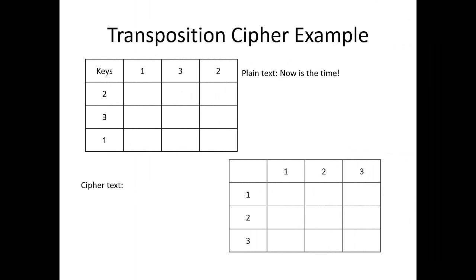So to be a little more specific, here is an example of transposition cipher. So let's say your plain text is this: Now is the time. So we'll create this table, which has cells like this. So I'm going to just write down the plain text in the cells of the table, like this.